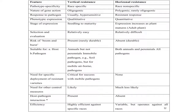Van der Plank's hypothesis gave the horizontal and vertical resistance concept. Horizontal resistance is governed by minor genes and vertical resistance by major genes. In vertical resistance, pathotype specificity is race-specific, whereas horizontal resistance is race non-specific. Vertical resistance is controlled by oligogenes and horizontal resistance by polygenes or rarely oligogenes.